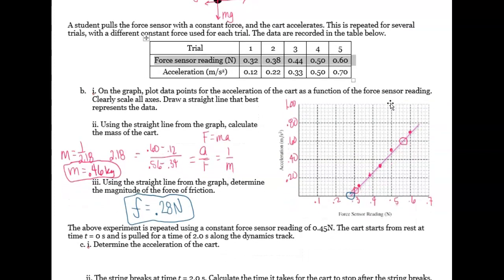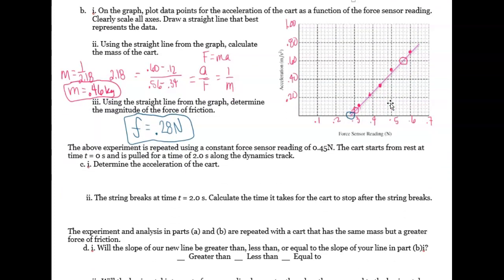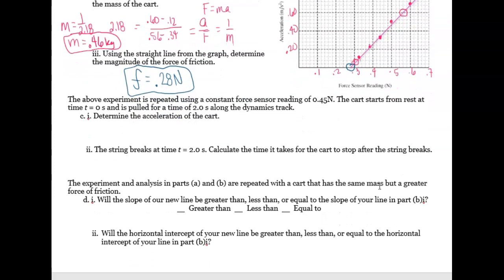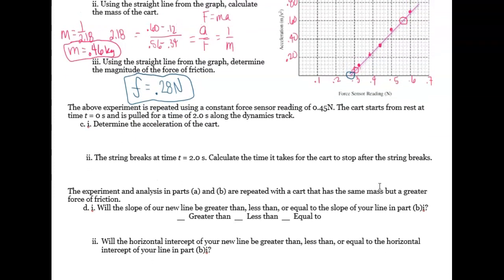So the next question asks, if it's repeated with a constant force sensor reading of 0.45 newtons, the car starts from rest at time equals zero and is pulled for a time of two seconds along the dynamics track. Determine the acceleration of the cart. So we need to figure out our acceleration. And acceleration is going to be equal to our net force over our mass. And it says it has a constant force on the force reader.